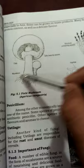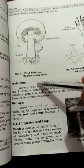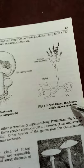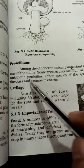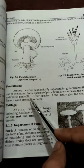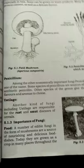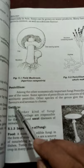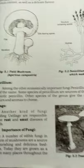Next is Penicillium — this is the Penicillium fungus from which penicillin is made. It has spores that help in reproduction, and hyphae that absorb food. Some species of Penicillium are the source of the well-known antibiotic penicillin — the first antibiotic isolated from this fungus. Other species of the genus give characteristic flavors and aromas to cheeses, so they are used in the food industry.